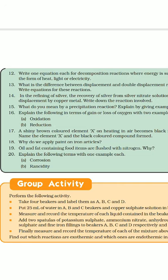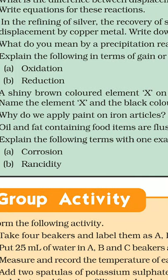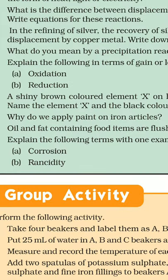The next question is: Why do we apply paint on iron articles? Iron is a reactive metal. In the presence of humid air, that is moisture, it rusts to form a layer of Fe2O3·xH2O. So in order to prevent rusting, paint is applied which forms a protective layer over iron and prevents direct contact of air and water.